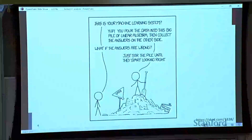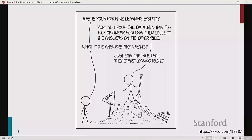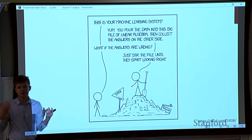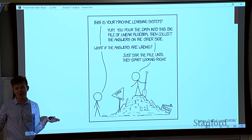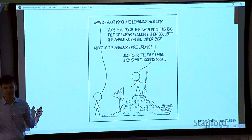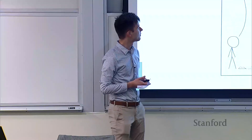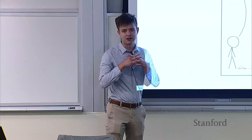If you haven't seen this XKCD, now you have. Person A says: 'This is your machine learning system.' Person B says: 'Yup, you pour the data into this big pile of linear algebra and then collect the answers on the other side.' Person A: 'What if the answers are wrong?' Person B: 'Just stir the pile until they start looking right.' At its worst, deep learning can feel like this. You have a model, maybe it works for some things, maybe not for others. The changes we make are based on intuition, and it's very difficult to understand our models on any level. Today we'll go through a number of ways to carve out little bits of understanding.